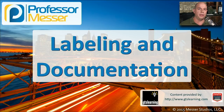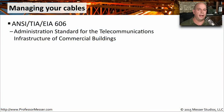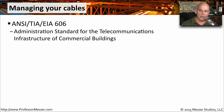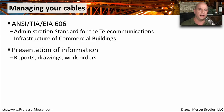When you have a computing environment, you will very quickly have many devices and many cables. So it's important that you're able to label and document everything in your environment. If you've ever wondered how to start the documentation process for all of your cabling, one good place to go would be the ANSI TIA EIA 606 standard. This is the administration standard for the telecommunications infrastructure of commercial buildings, and it will help you decide how to set up this documentation.